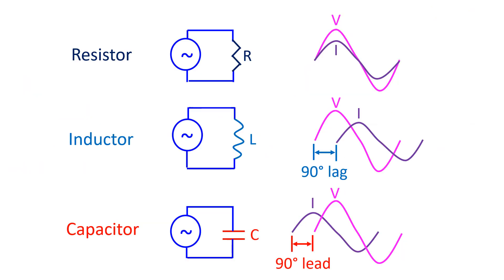If an alternating current is fed to a resistor, voltage and current will be in phase, meaning that they will rise and fall in the same pattern.